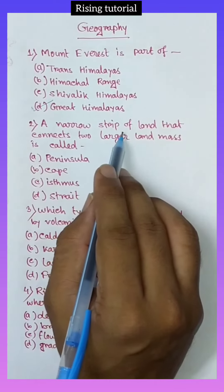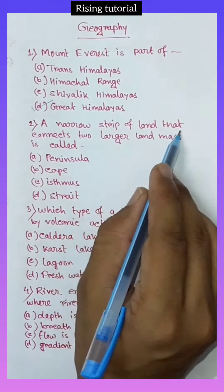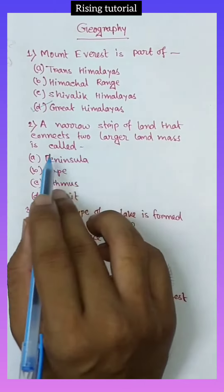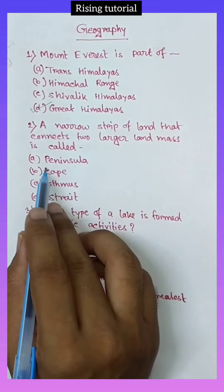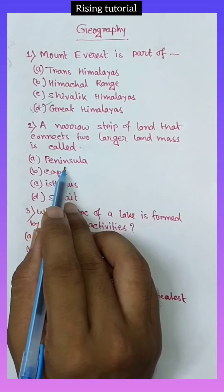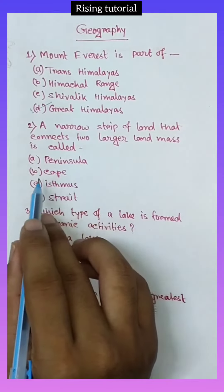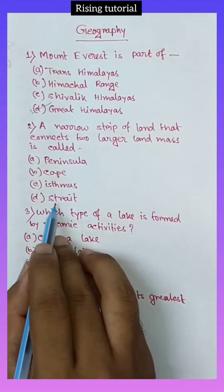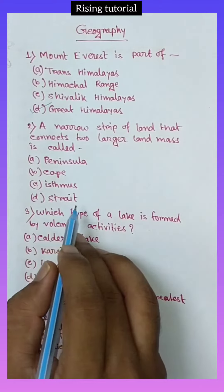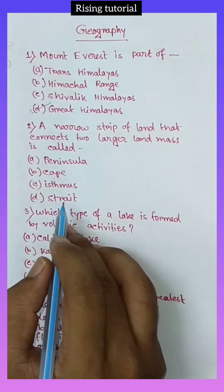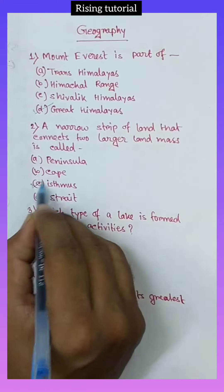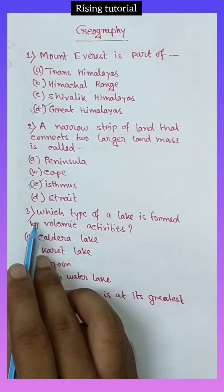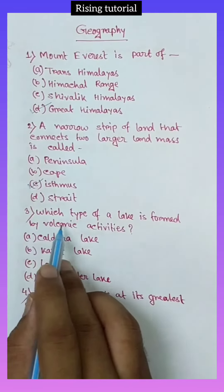Number 2. A narrow strip of land that connects two larger land masses is called: option A, Peninsula; option B, Cape; option C, Isthmus; option D, Strait. Answer key: option C, Isthmus.